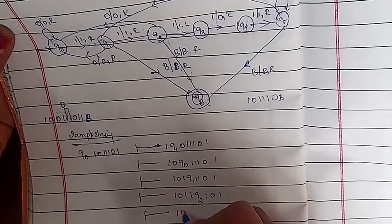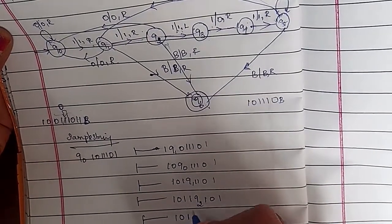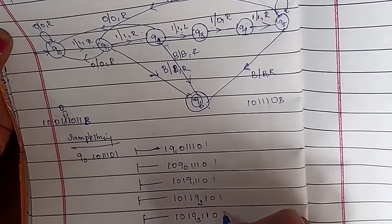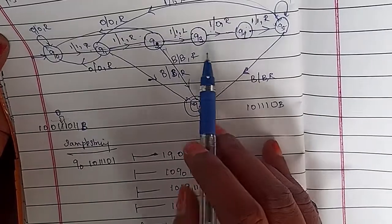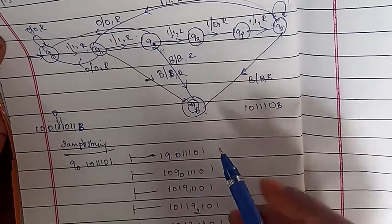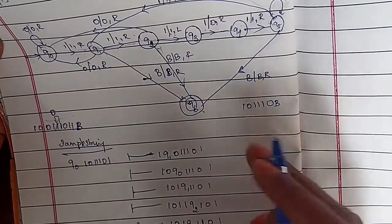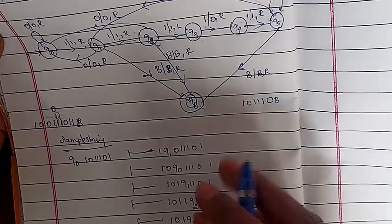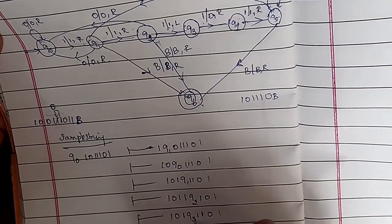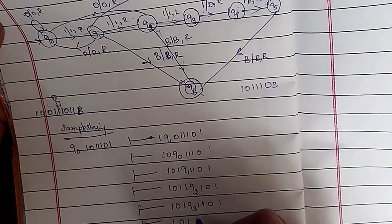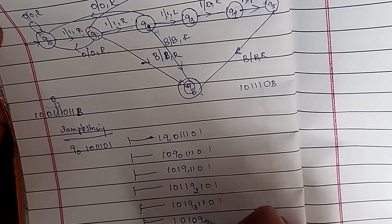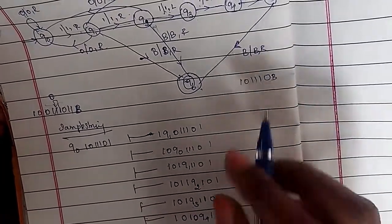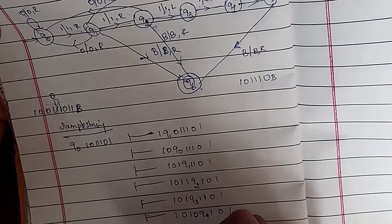Going left, the state is Q3 on one, and you have one zero one to the right. Q3 on one changes to zero — so that one becomes zero — and you go right direction as Q4. So: one zero zero Q4 one zero one. Then Q4 on one: one zero zero one Q5 zero one.